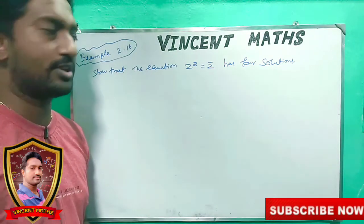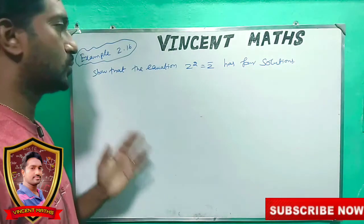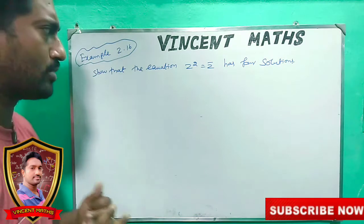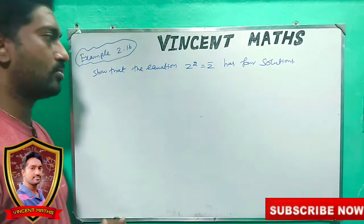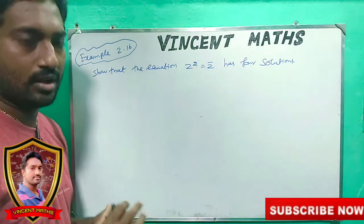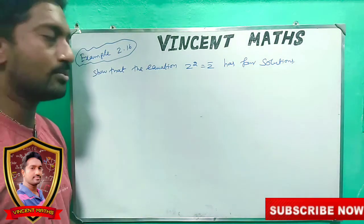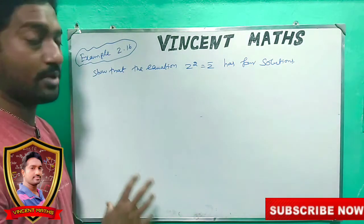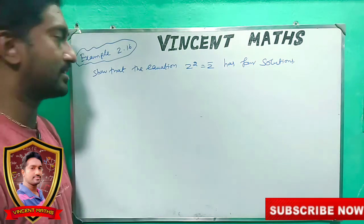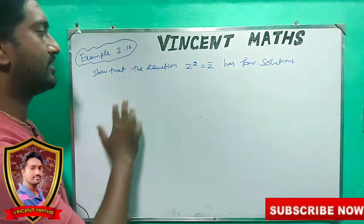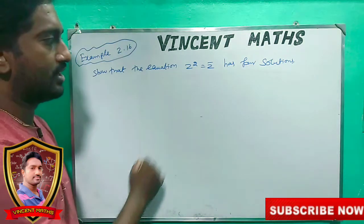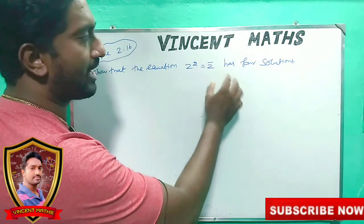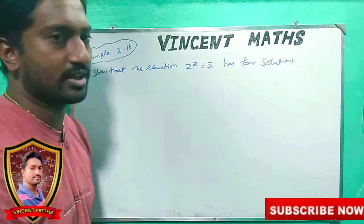This is not difficult. We will take the exam, 2.16. It is very easy, friends. Very easy, very easy. It is very easy to take 2 marks. So that the equation z squared equal to z bar has four solutions.